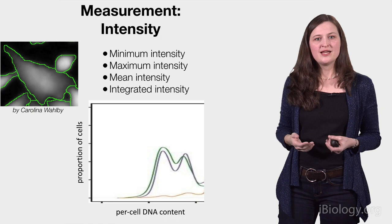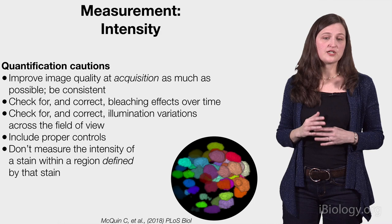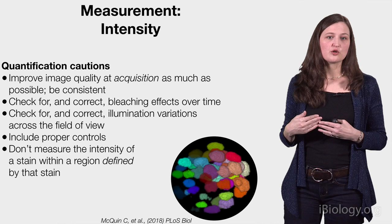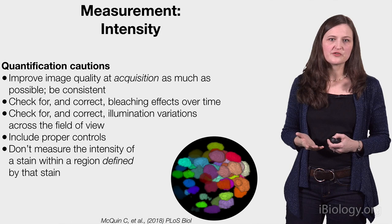Or, you might decide empirically based on measuring positive controls. Now, some cautions when you're measuring intensity in images. First, you should check out some tips in our overview video about image acquisition — it's always better to improve quantification at the image acquisition stage rather than trying to correct for it later. But still, you should always check for things like bleaching effects over time, illumination variations across the field of view, and correct for them where possible. You always want to include proper controls, of course.